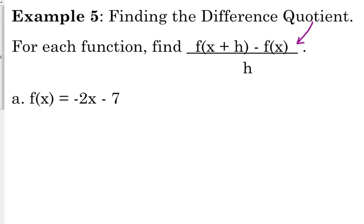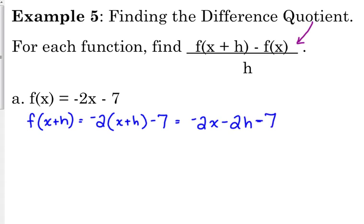So if our f of x is negative 2x minus 7, I'm going to start by finding out what is f of x plus h. That means I'm going to take my f function and replace the x with x plus h. I took my f of x and replaced the x with x plus h, and then I'm going to simplify. So that's negative 2x minus 2h minus 7.